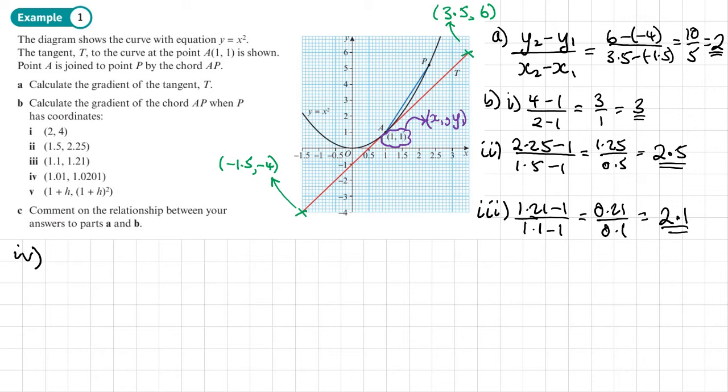Let's see what happens. The next one that we have is going to be 1.0201 minus 1 over 1.01 minus 1. That leaves us with 0.0201 divided by 0.01, effectively times by 100.